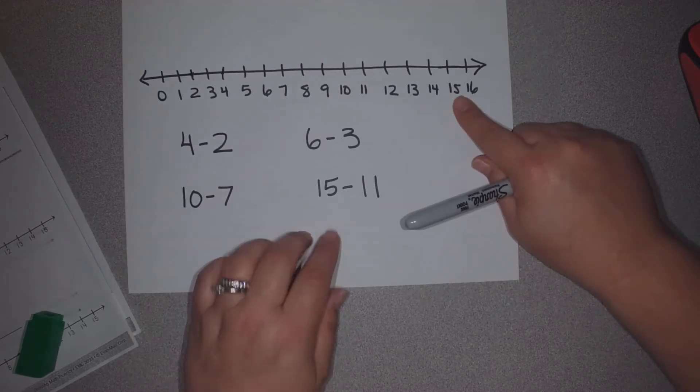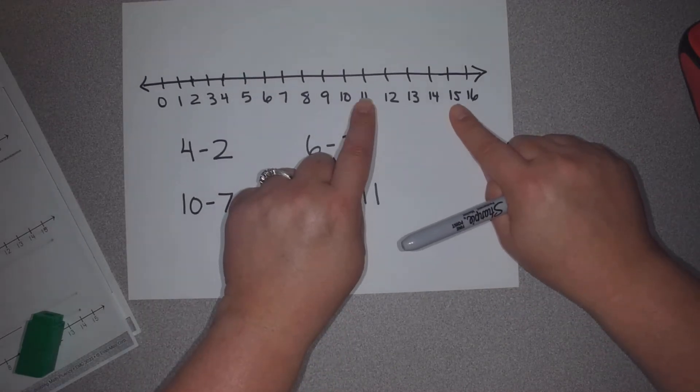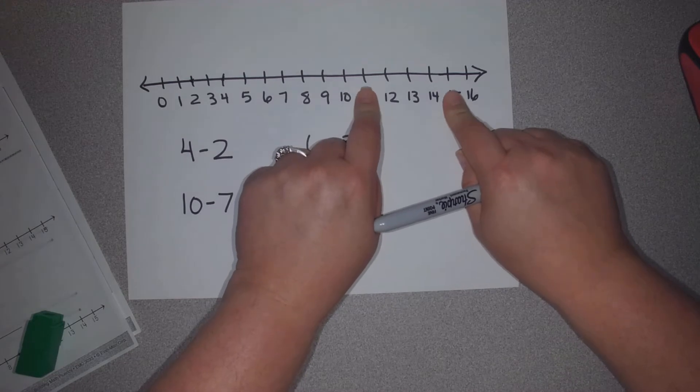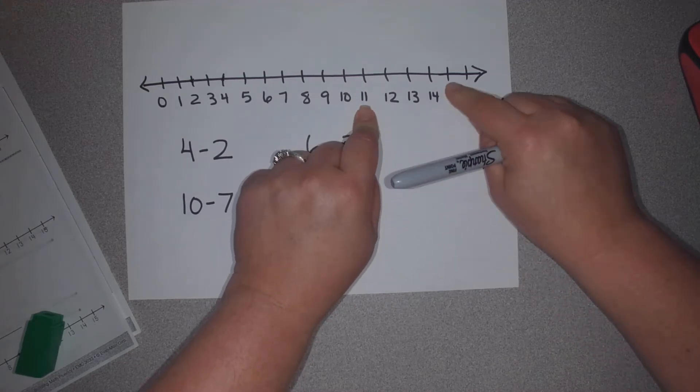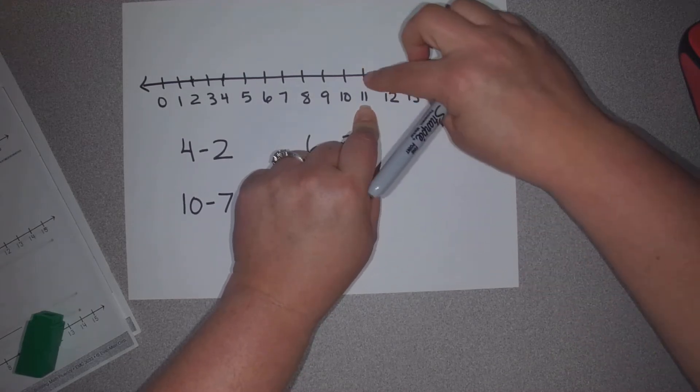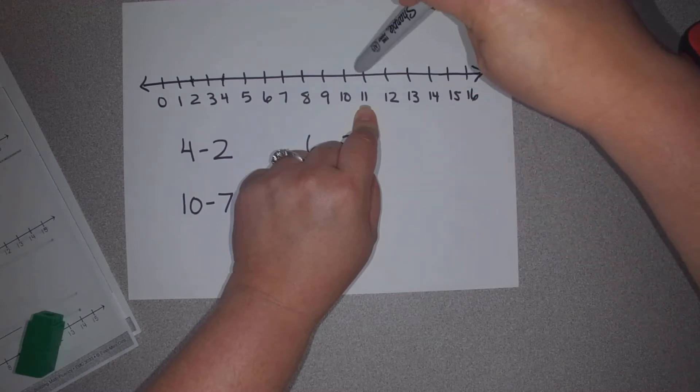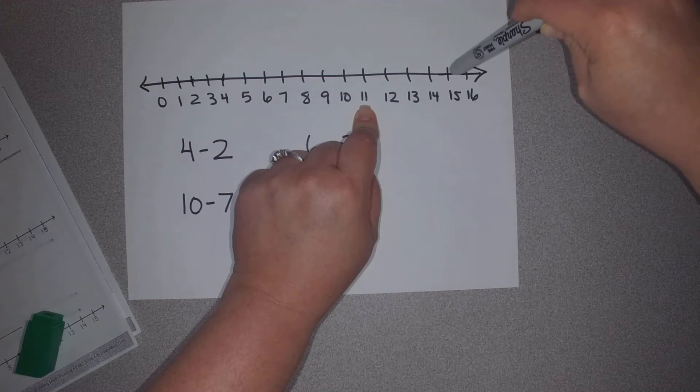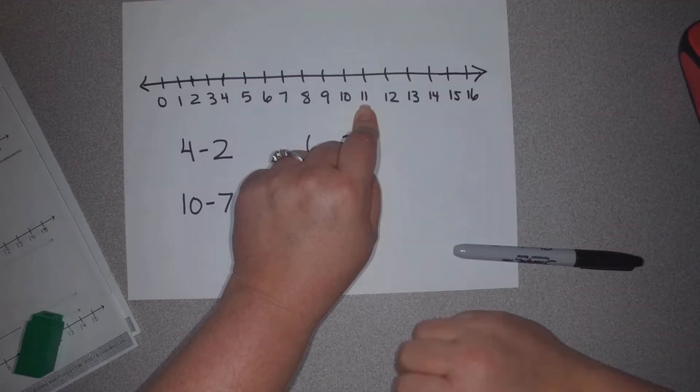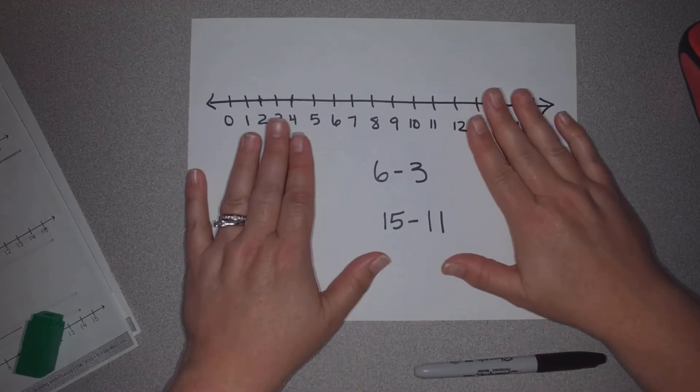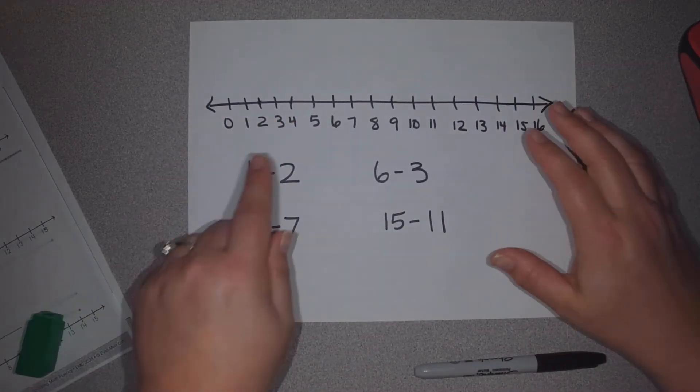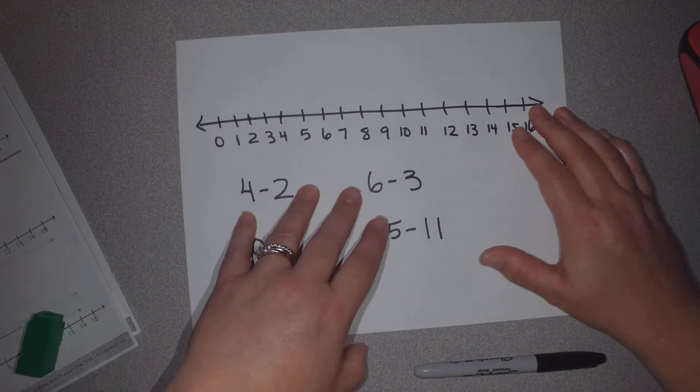One more. I have 15 and 11. I want to find the difference between these two numbers. I could count back or I could count up. Let's give it a try. Start at the 11. 12, 13, 14, 15. The difference was 4 jumps. Okay, hopefully that makes a little bit of sense. Finding the difference and counting up instead of counting back.